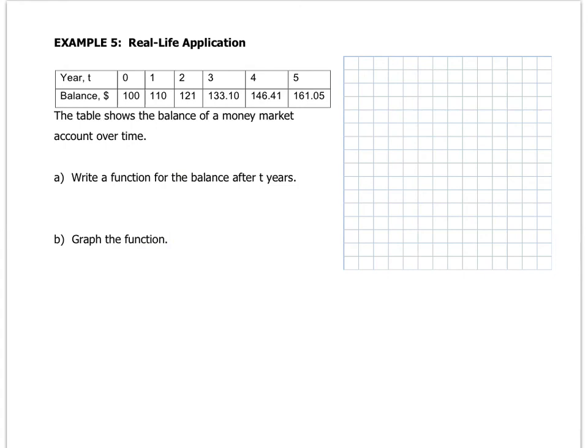So let's write the function y equals 500 times 1.003 to the 12T. So in example 5 we have to do two things. One is we have to write a function and then you have to graph the function. So this table, if you remember it, it should look familiar. This is from my example where I kind of described compound interest. So we have a formula y equals 100 dollars because that's our starting value. And from my example, we use the rate as 10%.